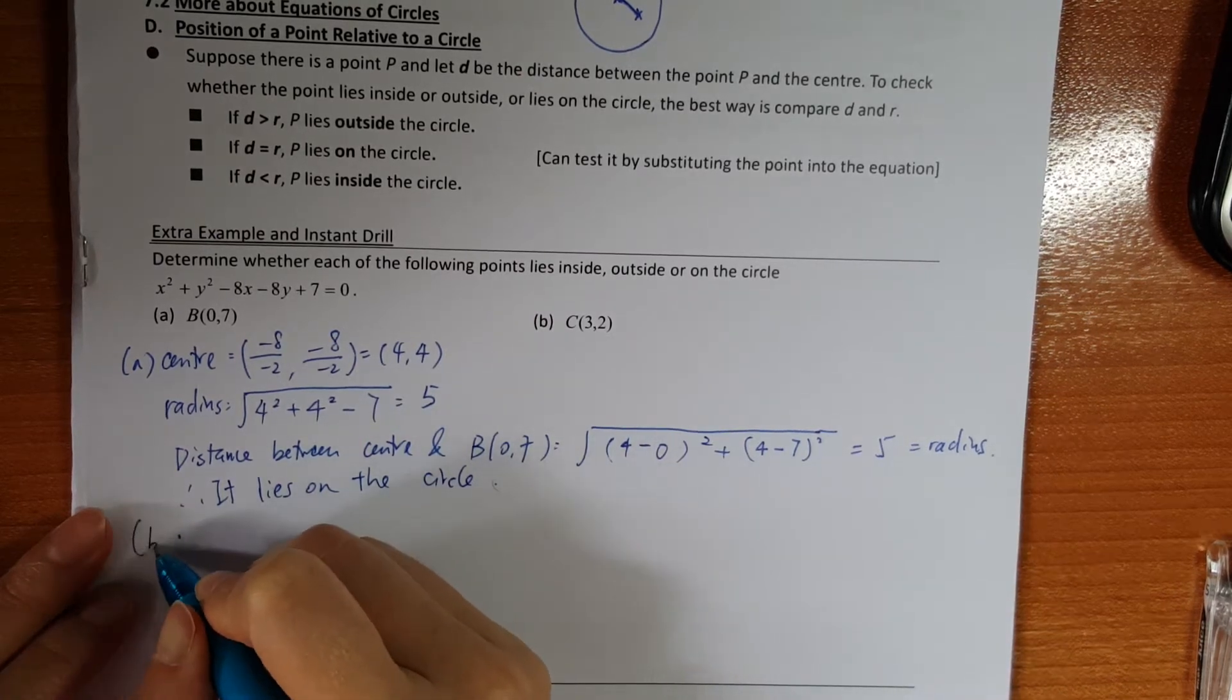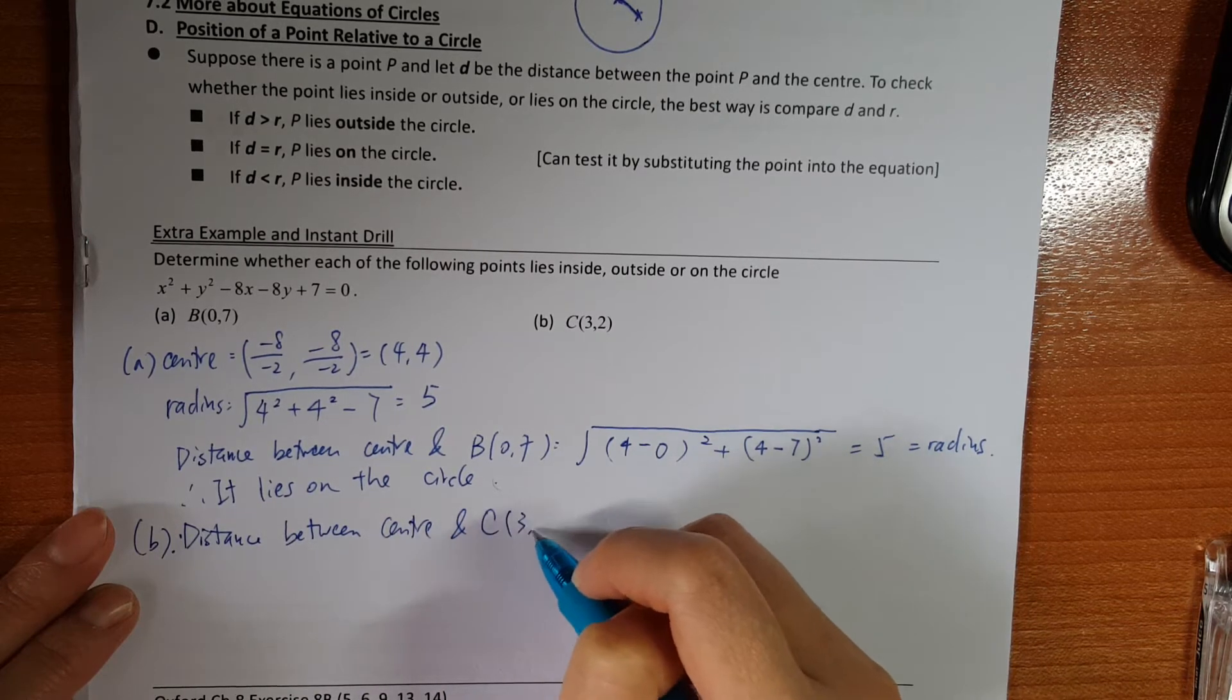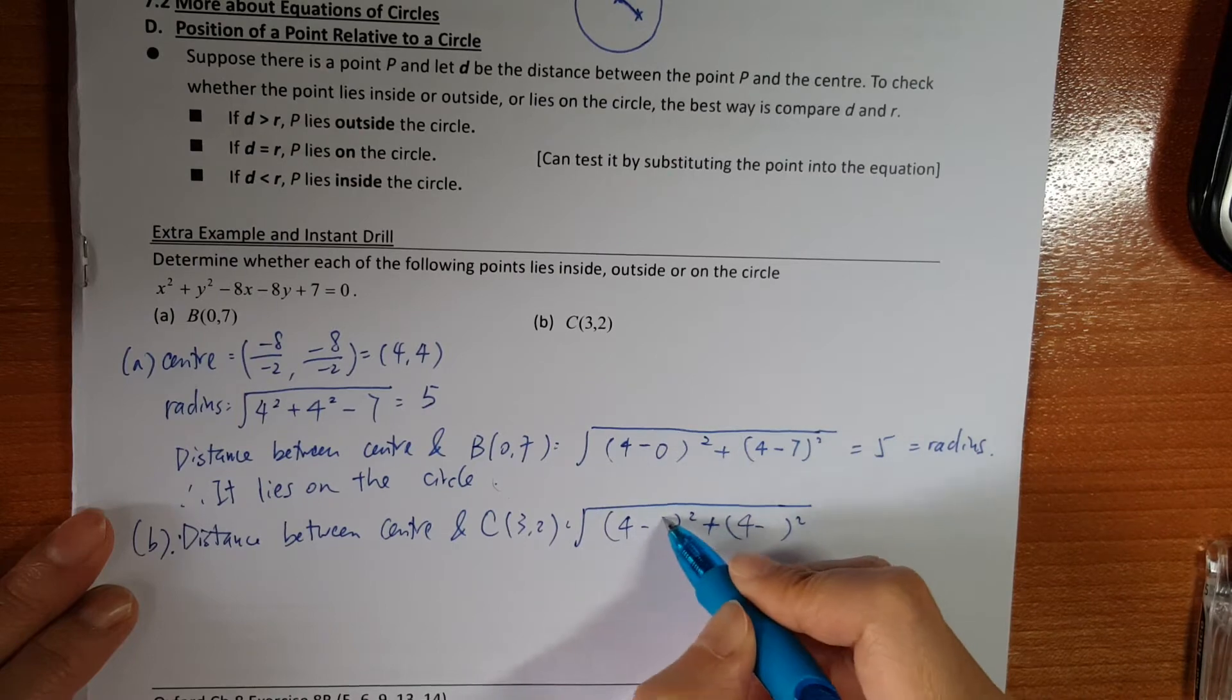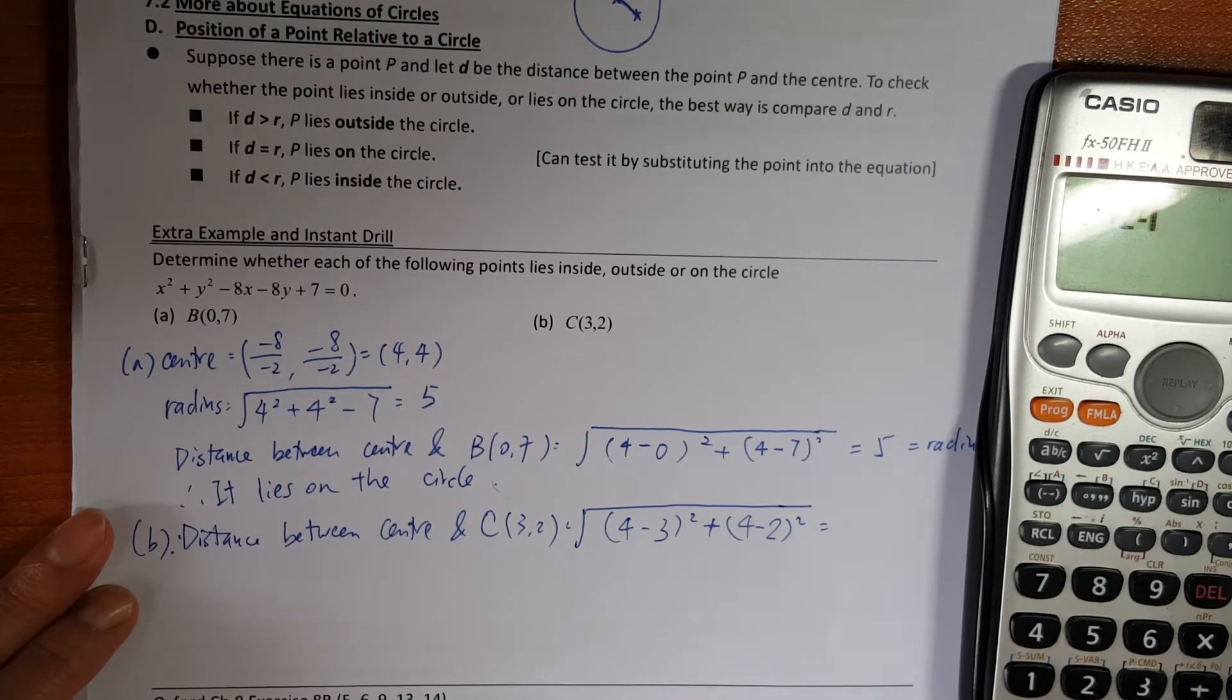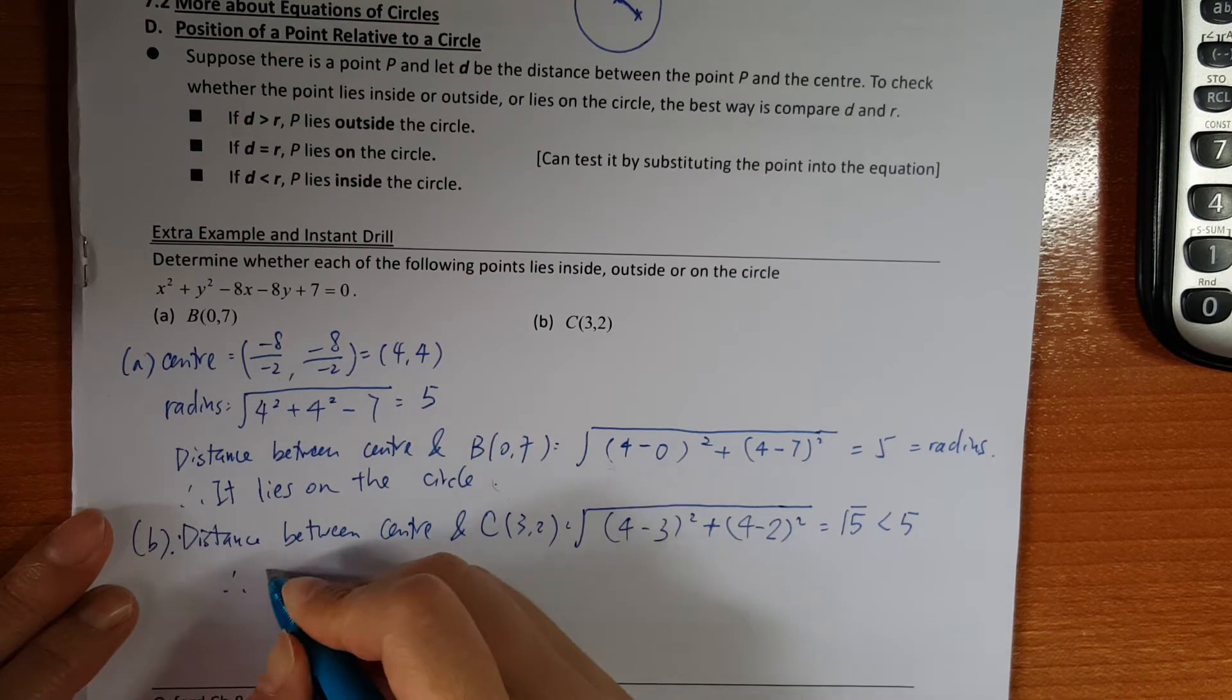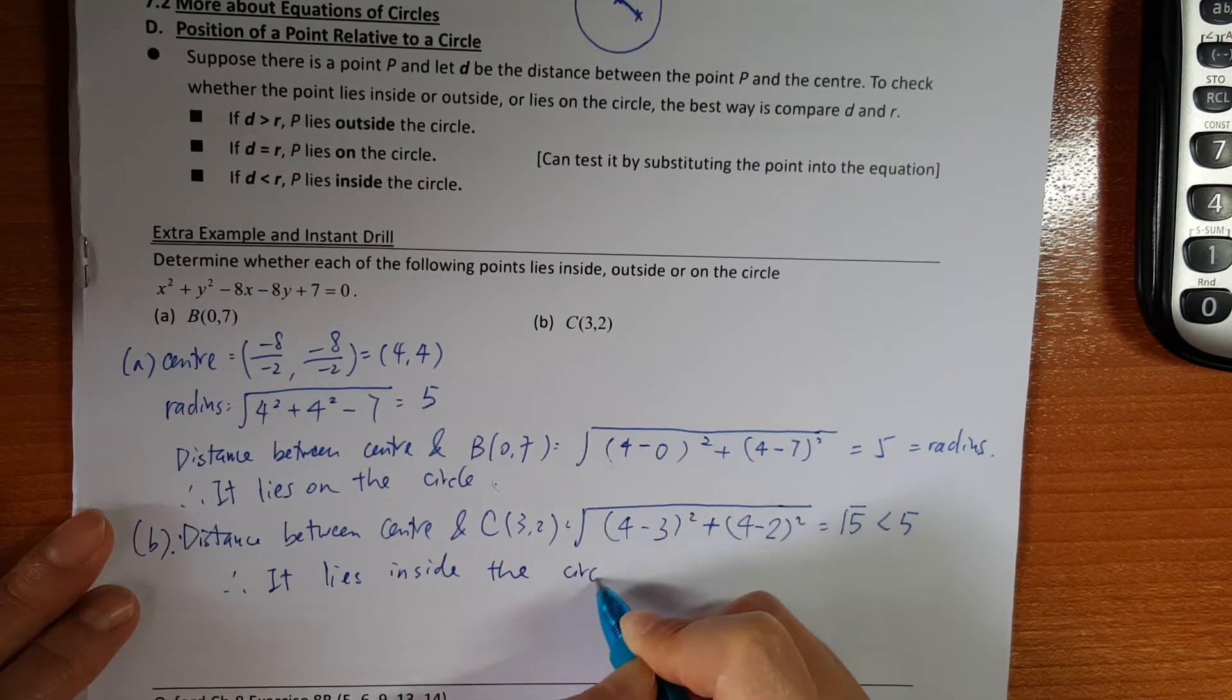And then for part B, the distance between the center and point C (3, 2). Once again I write 4 here, and then 3 here, 2 here. So it would be 1 squared plus 2 squared, so it would be square root 5. Very obvious it is smaller than 5. That means smaller than the radius. So it means the distance is shorter, which means it lies inside the circle.